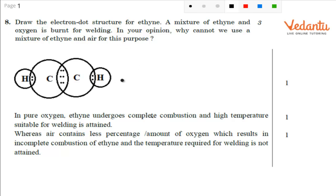This is your electron dot structure for ethane. We will discuss it in detail very soon. So, this is what your C2H2.